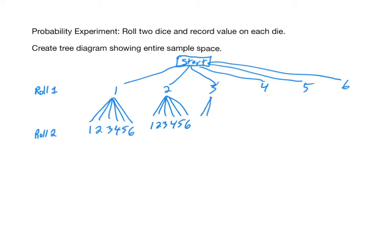So out of each of these, you're going to have six branches. One, two, three, four, five, six coming out of each. Now that we have a representation of the entire sample space, we can see what can happen when you roll two dice. Let's now look at a few questions about this experiment.